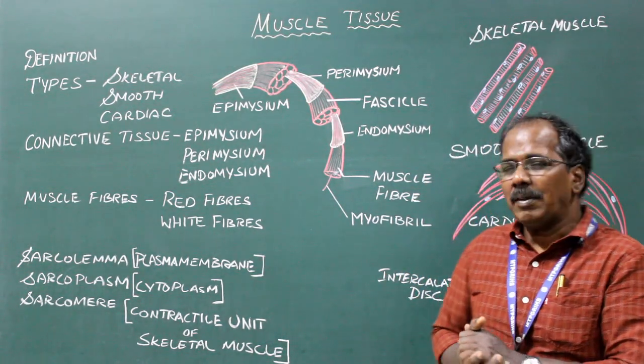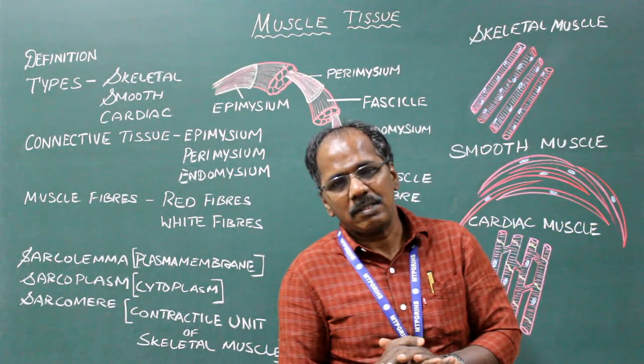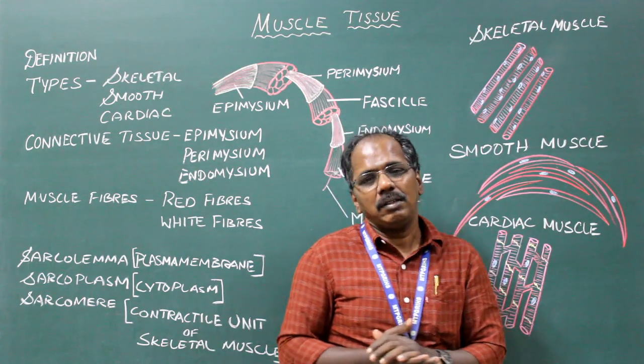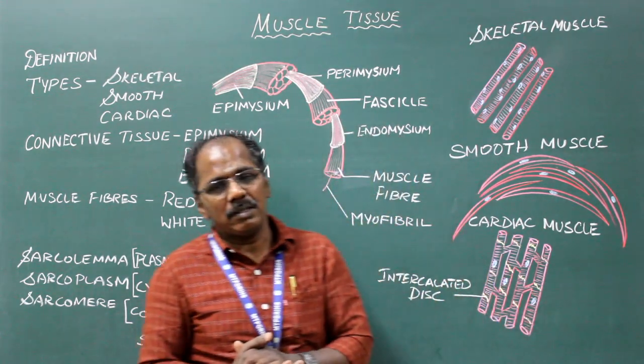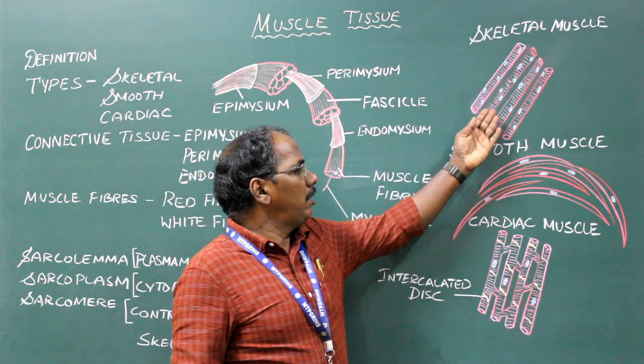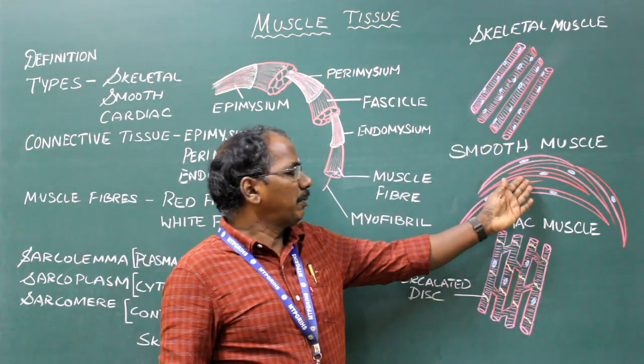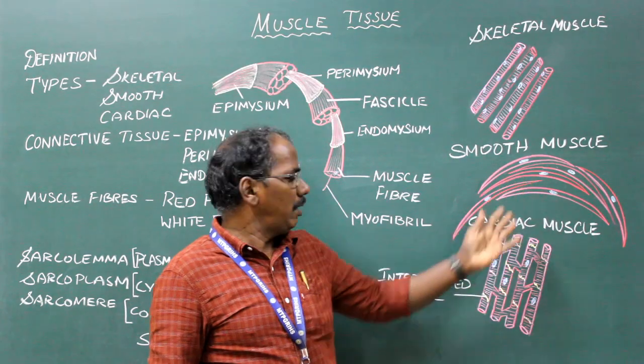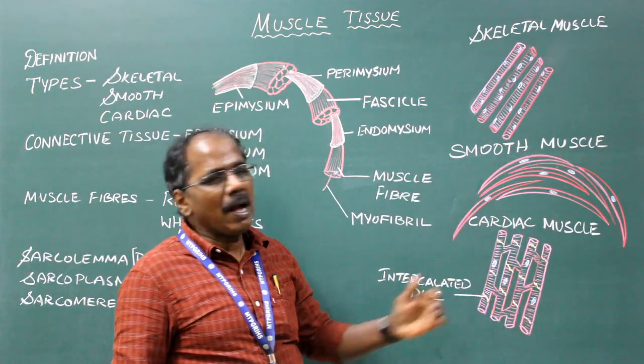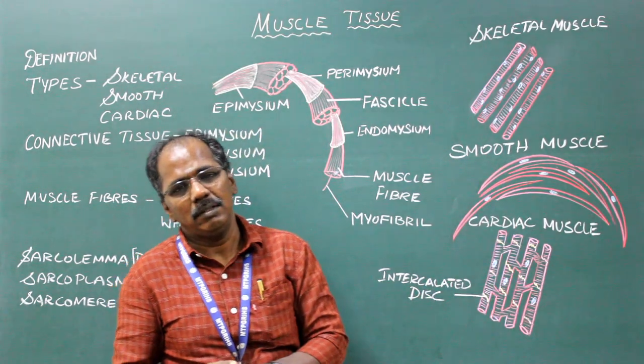Types of muscles. There are three types of muscles: skeletal muscle, smooth muscle, and cardiac muscle.